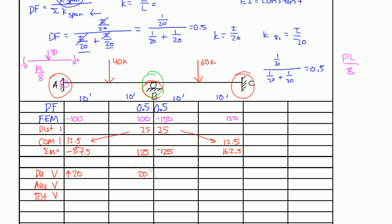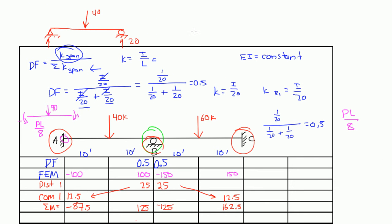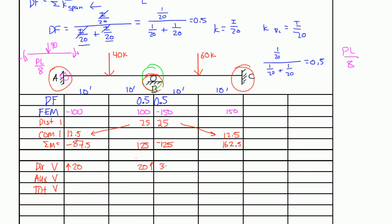To find the direct shear for span BC, we pretend it's a simply supported beam, find the reactions on both sides, and put them in the row. For span BC, you have a 60 kip load in the middle. With a pin and roller, you'd have 30 here and 30 here, because it's right in the middle. So both reactions are 30, going up.